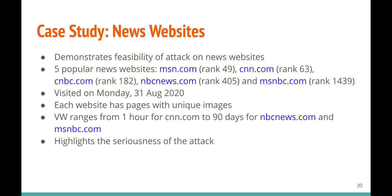We conducted a case study on news websites to demonstrate feasibility of the attack. We manually visited five popular news websites — MSN, CNN, CNBC, NBC News, and MSNBC — all highly ranked on Tranco, on August 31st, 2020. Each website had news articles with at least one unique image, and the vulnerability window of these cached images ranged from one hour for CNN.com to about 90 days for NBCnews.com. This highlights the seriousness: the attack can reveal which specific articles a user read on these popular websites.